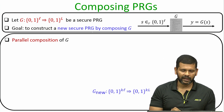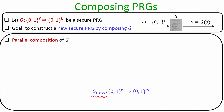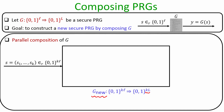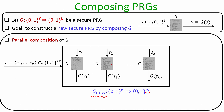By doing the parallel composition of algorithm G, our goal is to design a new random number generator G_new which takes an input of size k·l bits and produces an output of size k times big L bits. G_new takes k blocks of inputs where each block is of size little l bits, each uniformly random. Internally, G_new runs algorithm G on the first block independently, another copy of G on the second block, and so on up to the k-th block, then simply concatenates the outcomes of each independent invocation of G. That is how you parallelly compose algorithm G.